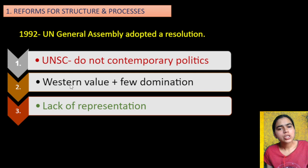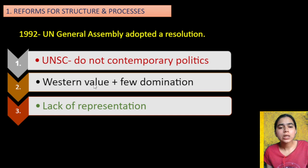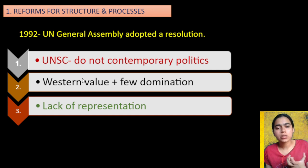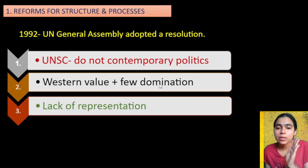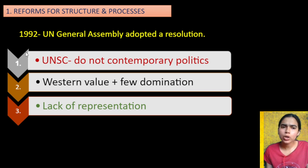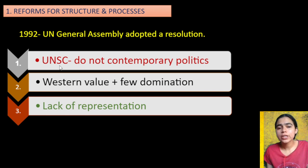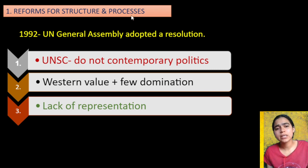The second point of the 1992 resolution said that the Security Council has mostly Western values, and the five permanent members with veto power have domination — others have been suppressed. There is a lack of representation in the Security Council. So the 1992 resolution was saying that the UN Security Council needs to be completely changed — meaning reforms in structure and process are necessary.